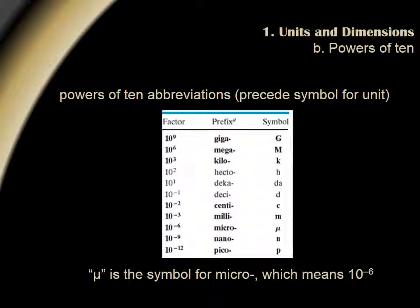Base units that are powers of 10 are often abbreviated and precede the symbol for the unit. For example, mu is the symbol for micro, which means 10 to the minus 6. Some of the most common power of 10 prefixes are given in the following list.